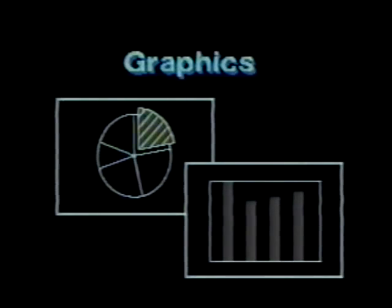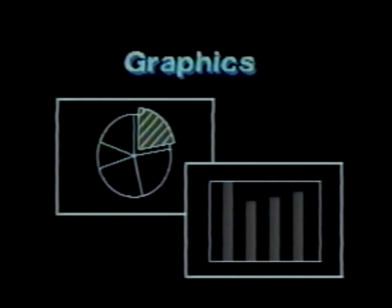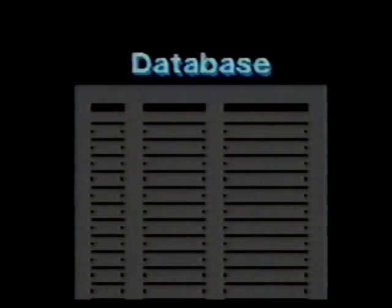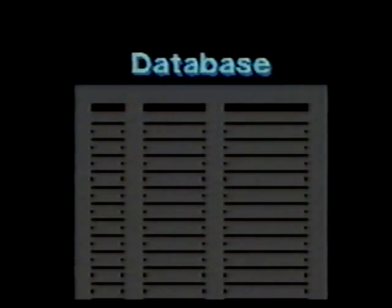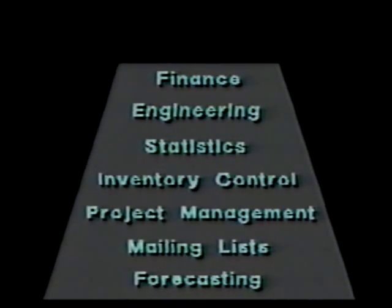1-2-3 also has a business graphics processor for making pie charts, bar charts, and the like. Thirdly, it has a database for making and using lists such as address books and financial journals. These processors dramatically improve making and using spreadsheets for number-oriented applications.